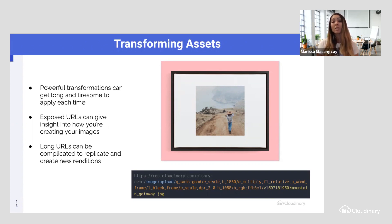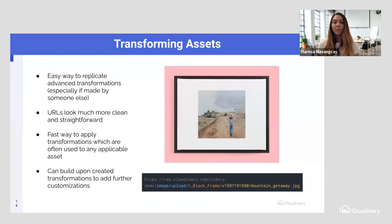Once you apply transformation presets within the URL, you can see it's now a much shorter URL. All we had to do was create what we called the black frame transformation preset, so that it knows to apply this particular set of actions to the asset.